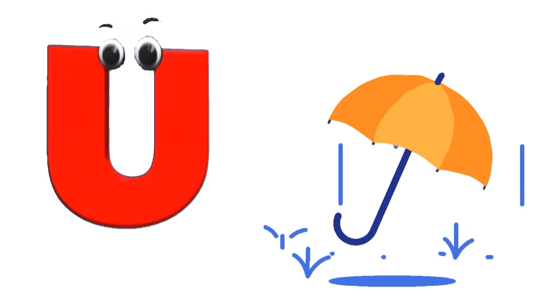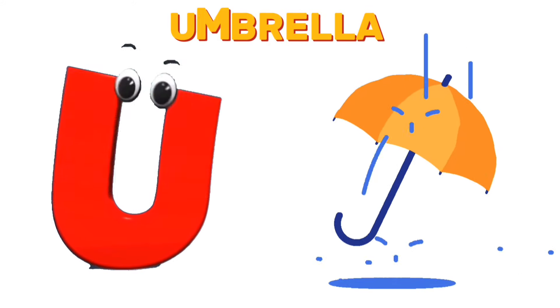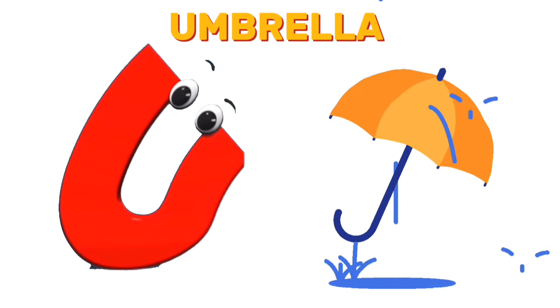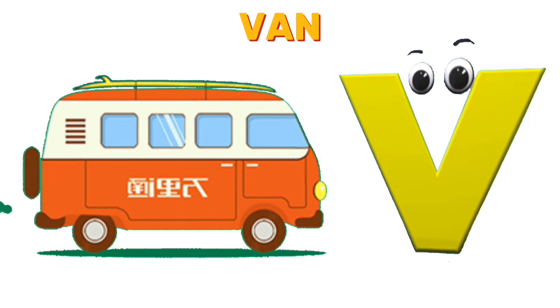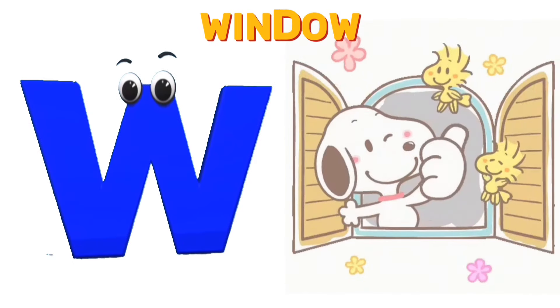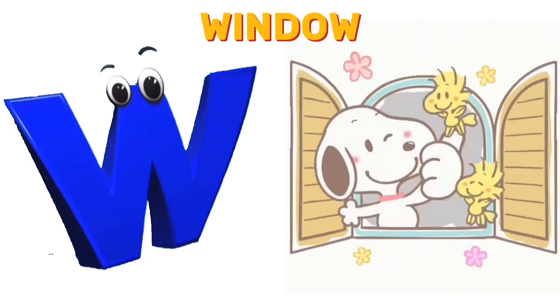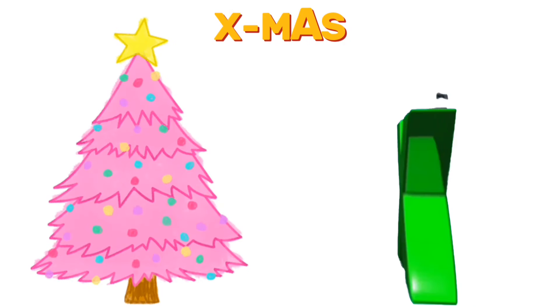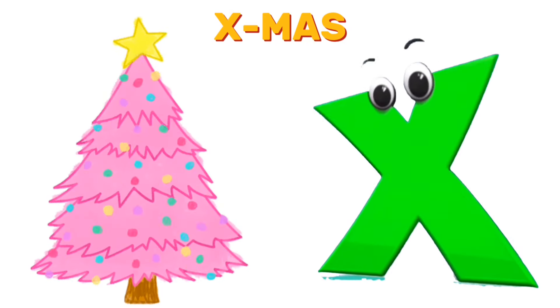U is for umbrella. Umbrella. V is for van. Van. W is for window. Window. X is for Xmas. Xmas.